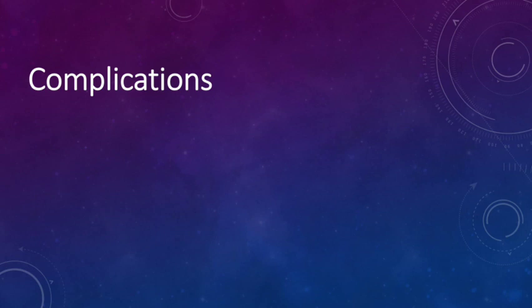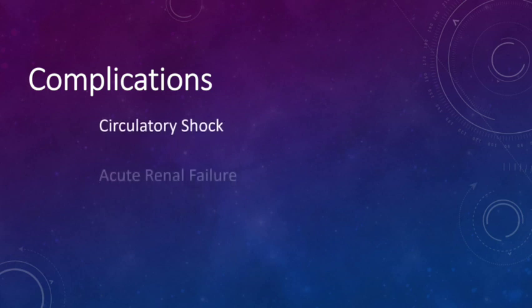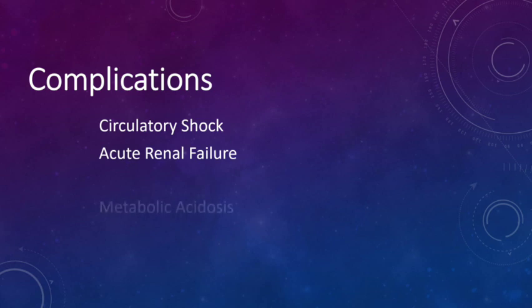What are the complications of diarrhea if it is left untreated? First, circulatory shock. Second, acute renal failure. Then metabolic acidosis. There is fluid and electrolyte imbalance, and electrolyte depletion leading to lethargy and paralytic ileus.